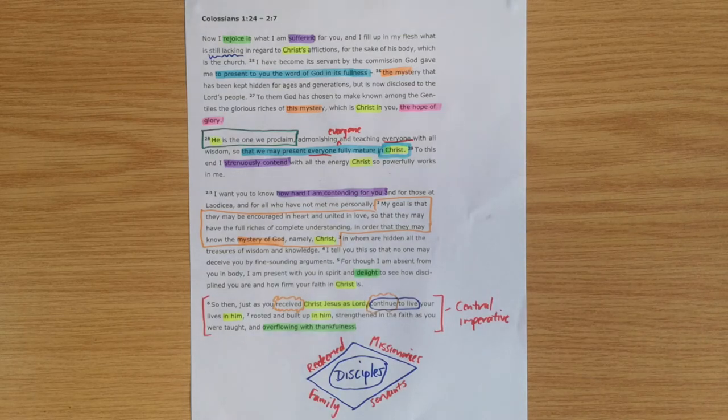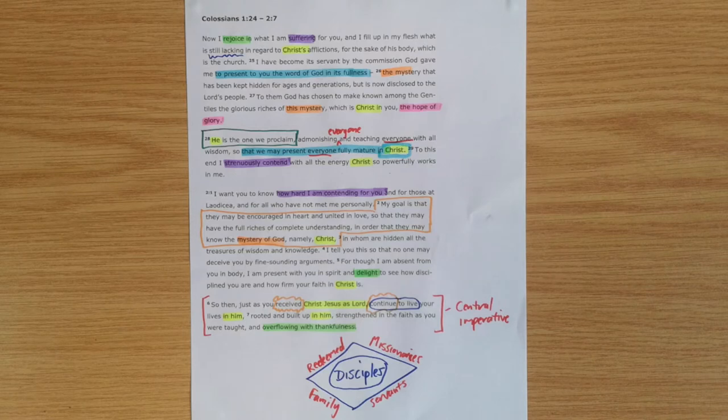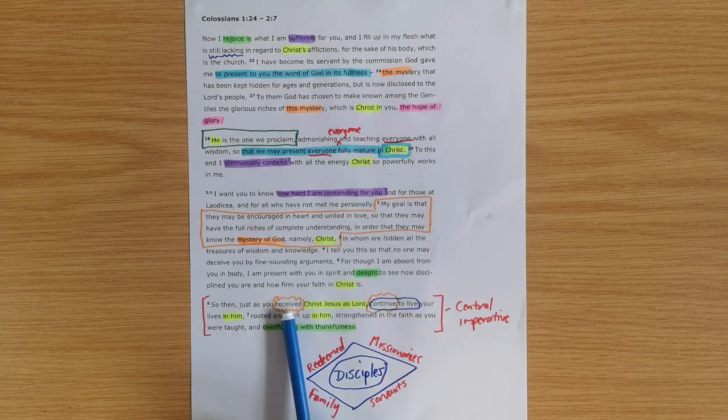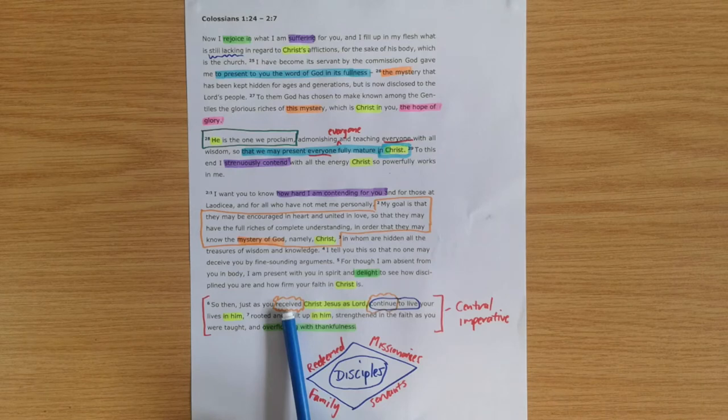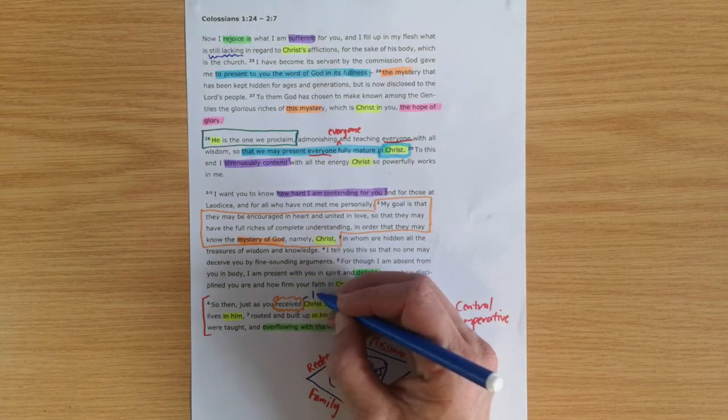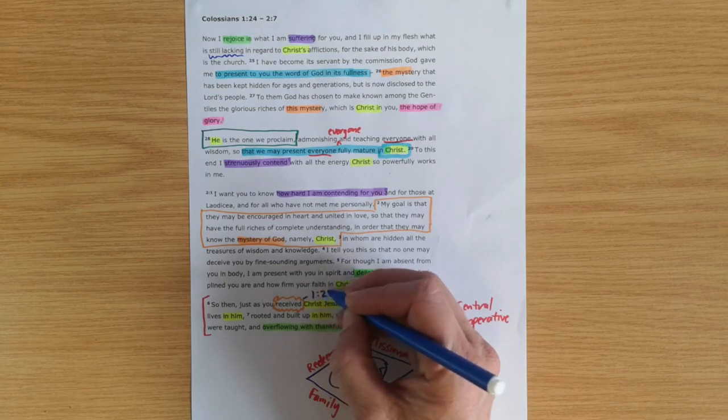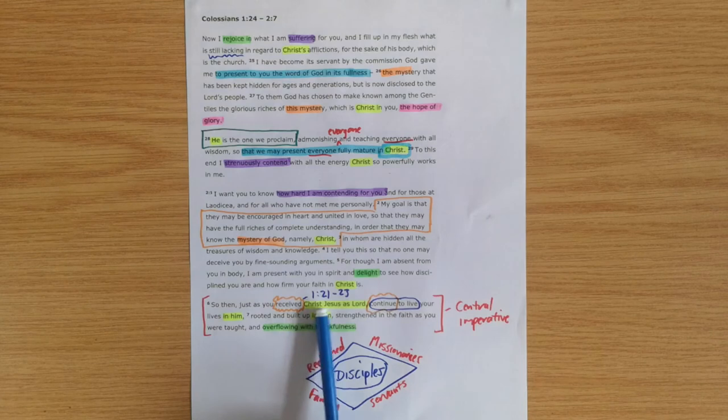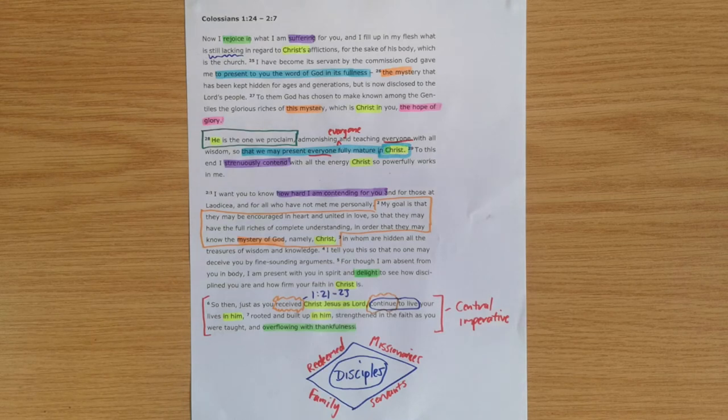Continue to live your lives in him, rooted and built up in him, strengthened in the faith as you were taught, and overflowing with thankfulness. Now, what it means then for us to be disciples of Jesus is that we are those who have received Christ Jesus as Lord. This is a massive statement. If you want to go and look further at what this means, look at chapter 1, verses 21 to 23.